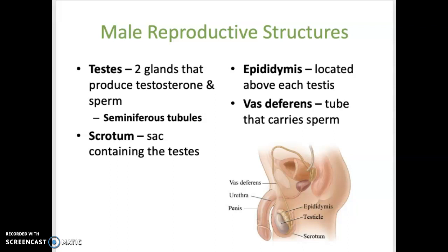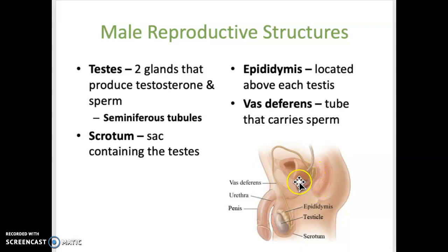Seminal vesicles are two glands located behind the bladder that produce seminal fluid. The prostate gland is a single gland located directly under the bladder that contributes to seminal fluid as well. The seminal vesicles are right here — you can see one of them — and the prostate gland is this structure under the bladder.